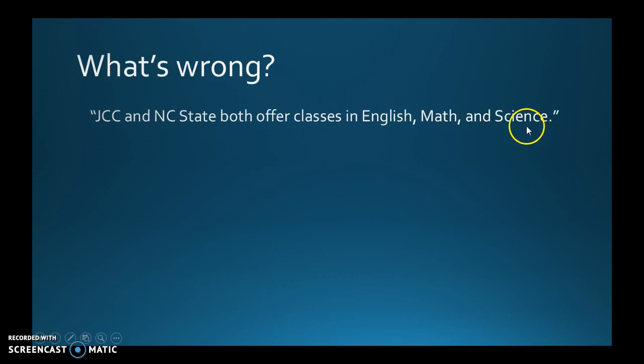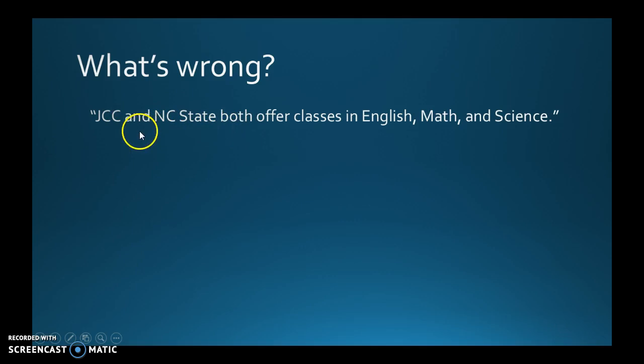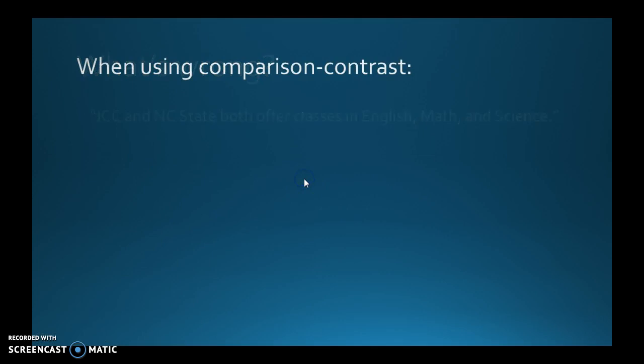What about this one: 'JCC and NC State both offer classes in English, Math, and Science'? We have two things being compared and contrasted, and we have three different ways. But are we saying one is better than the other? Are we saying they're more similar? Are they different? It's kind of implied they're similar but it doesn't really say. You should say something like 'JCC and NC State are a lot more similar than people think because they both offer classes in English, Math, and Science.' You need to be more specific and clear about your position.